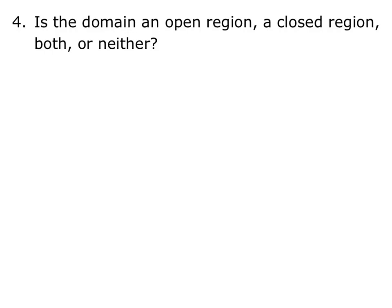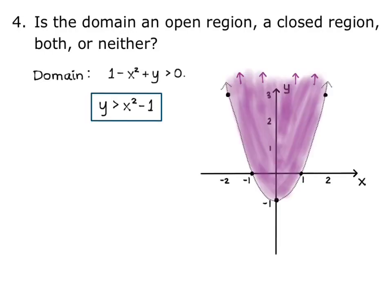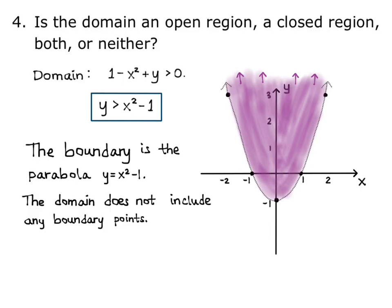In our example, we found that the domain is y strictly greater than x squared minus 1. So a boundary exists. The boundary is the parabola y equals x squared minus 1. But the domain does not include any boundary points, since the domain uses a strict inequality, causing us to use a dotted line for the parabola in the graph. So a boundary exists, but the domain does not contain any of the boundary points, so the domain is open.